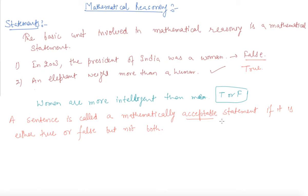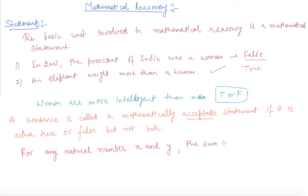Now consider: for any natural numbers x and y, the sum of x and y is greater than 0. This is a statement because it will be either true or false.